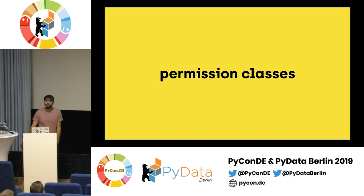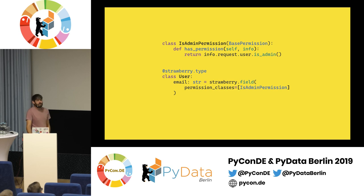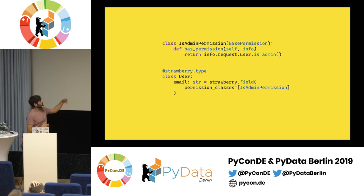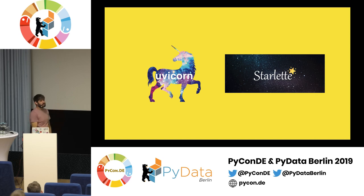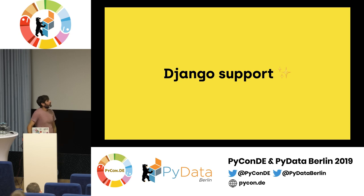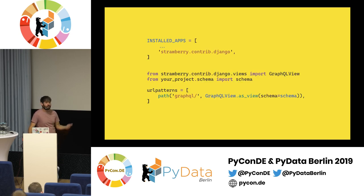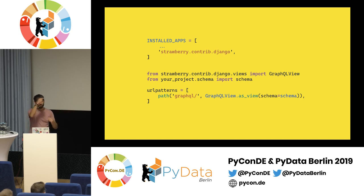We have some other features that make Strawberry more interesting than other libraries. The first one, which is something I really like, is permission classes, inspired by Django REST framework. You can pass a list of permission classes for a specific field, so you can make a field generic enough but also not return information to the wrong people. For example, we have a user type where the email is only returned if the current user is an admin, so you're not leaking data. We also support ASGI — the asynchronous version of WSGI — so you can use Strawberry with servers like Uvicorn or Starlette and build your API quite quickly. We also support Django, with a view you can import to render the GraphiQL interface, and we're also working on conversion of Django models to GraphQL types without having to define all the fields again, kind of like Django REST framework.